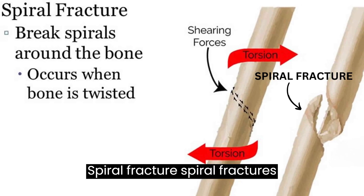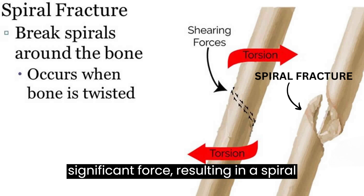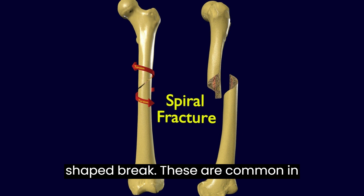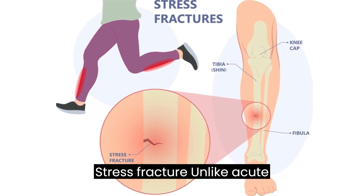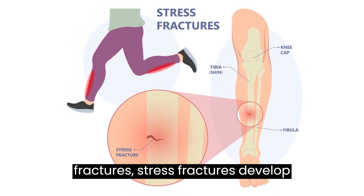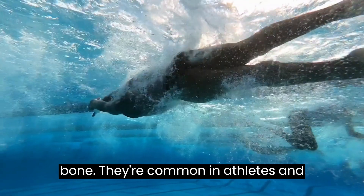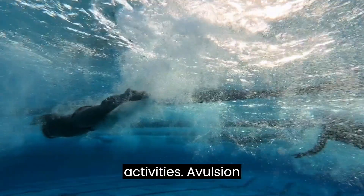Spiral fracture: spiral fractures occur when a bone is twisted with significant force, resulting in a spiral-shaped break. These are common in sports-related injuries and falls. Stress fracture: unlike acute fractures, stress fractures develop over time due to repetitive stress on a bone. They're common in athletes and people who engage in high-impact activities.